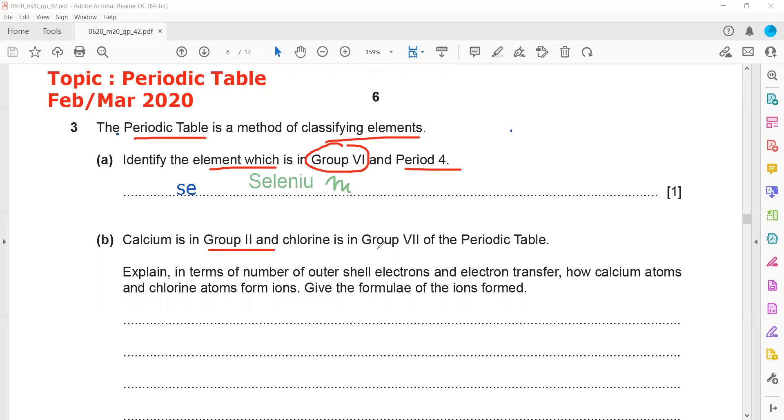Calcium is in group 2 and chlorine is in group 7. Explain in terms of number of outer shell electron and electron transfer how calcium atom and chlorine atoms form an ion and give a formula of the ions formed.